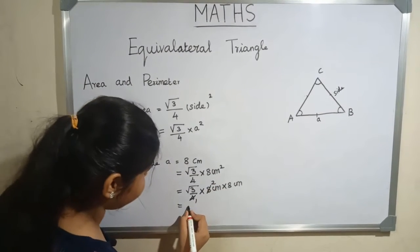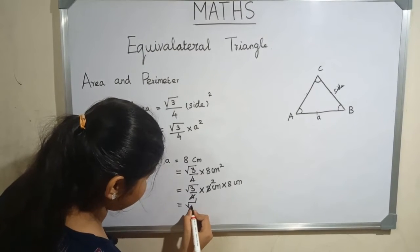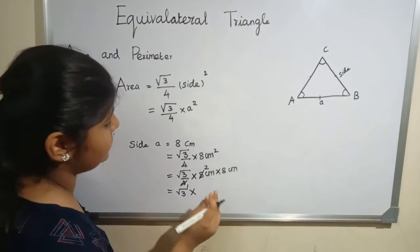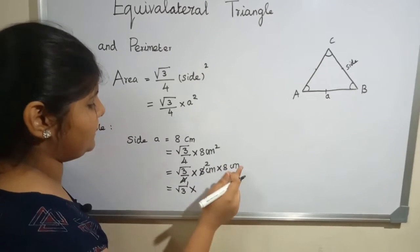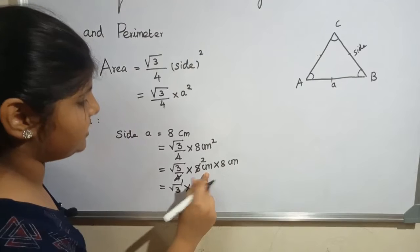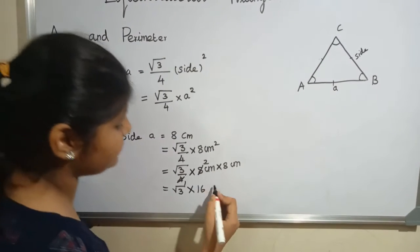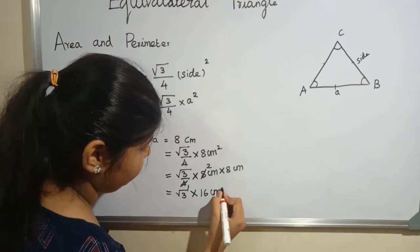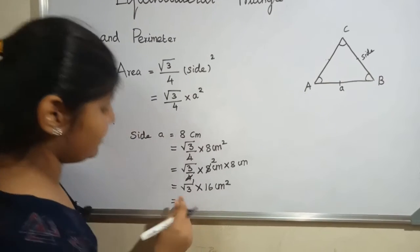2 eights are 16 centimeters into centimeters equals centimeter square. Root 3 multiply 16 centimeter square.